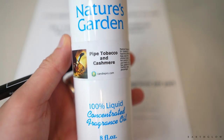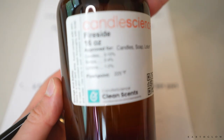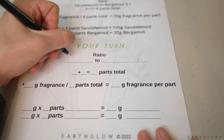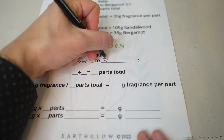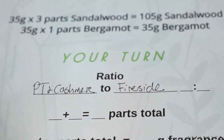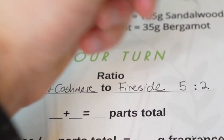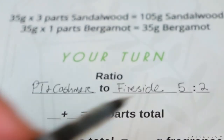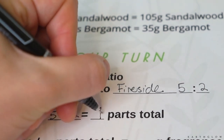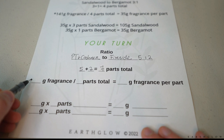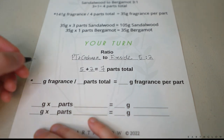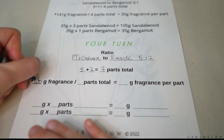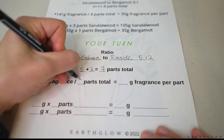Now let's say I want to blend pipe tobacco and cashmere from Nature's Garden with fireside by Candle Science — we'll call them PT/cashmere and fireside. This time we're going to do a five to two ratio. So I add five plus two to get seven parts total. This asterisk is a reminder that the fragrance amount is based on your wax weight and the percentage of fragrance you're using. Let's say for my recipe I need 200 grams of fragrance, and I have seven parts total.